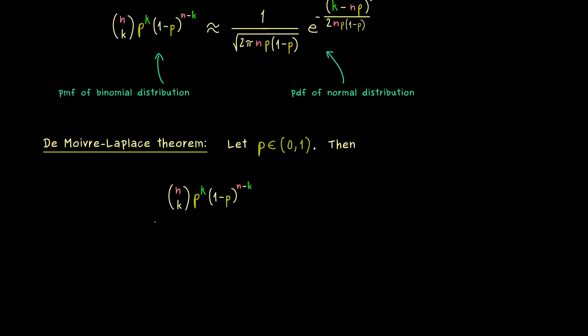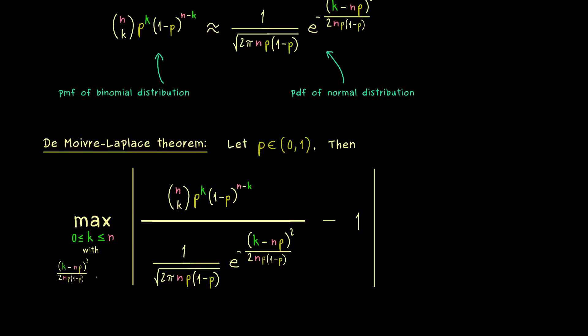And now what we can do in the precise formulation is to look at the ratio of both instances here. Therefore we can take the pmf of the binomial distribution and divide it by the pdf of the normal distribution. And then what we get is a nice quotient, which should be roughly equal to 1. Hence if we subtract 1, we have a number close to 0. And we are not really interested in the sign of that number, so we can take the absolute value to make it positive. However, at this point we have to put in, that we stay with k around our expectation n times p in the limit n to infinity. Hence we go through all k between 0 and n with the following property. Namely, what we put into our exponential function here should be bounded by a constant. So let's say this input here is less or equal than a constant c.